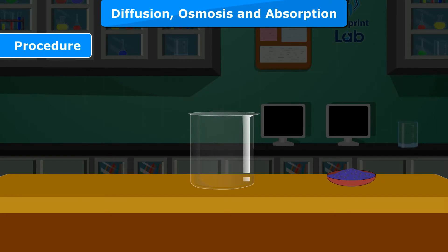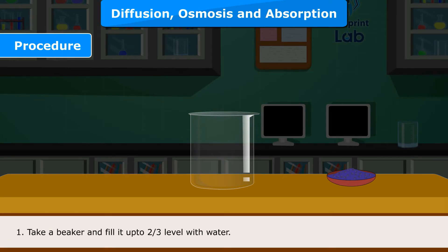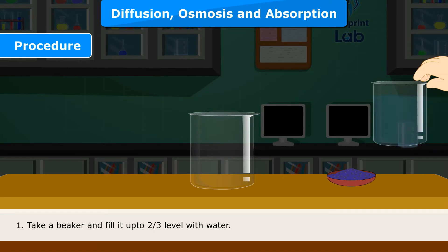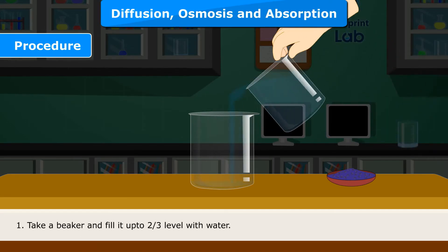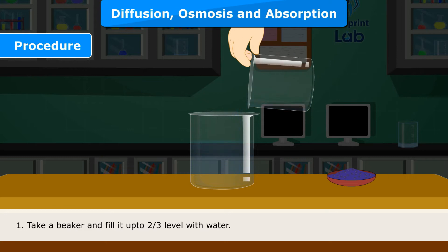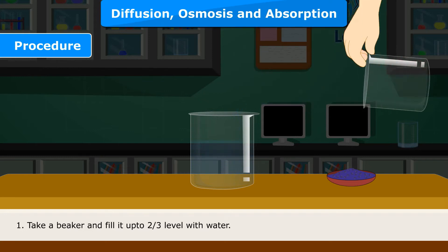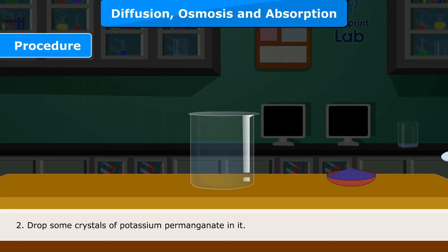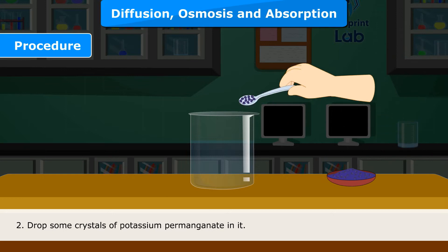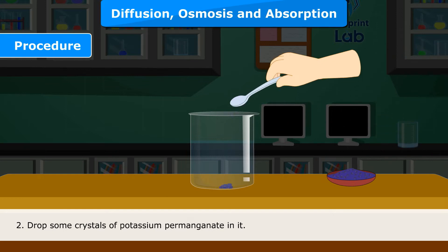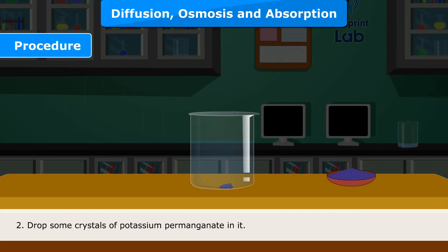Procedure: 1. Take a beaker and fill it up to two-third level with water. 2. Drop some crystals of potassium permanganate in it. 3. Keep the beaker undisturbed and observe.